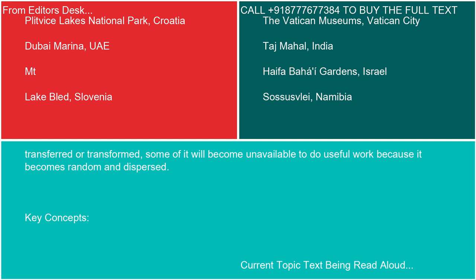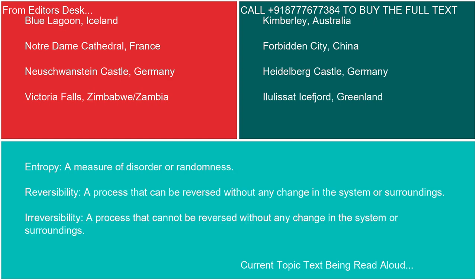Key concepts: Entropy — a measure of disorder or randomness. Reversibility — a process that can be reversed without any change in the system or surroundings. Irreversibility — a process that cannot be reversed without any change in the system or surroundings.